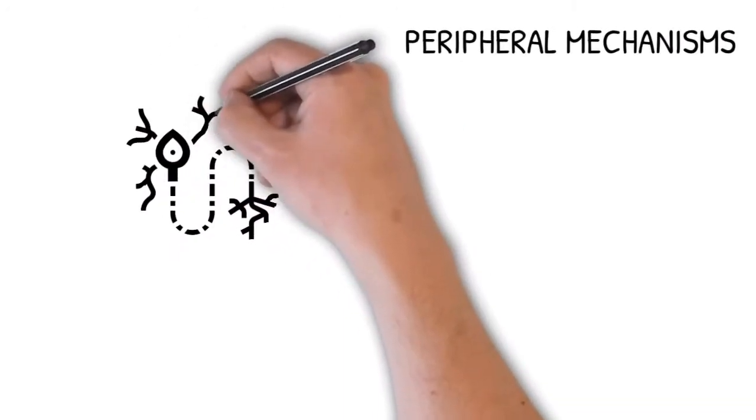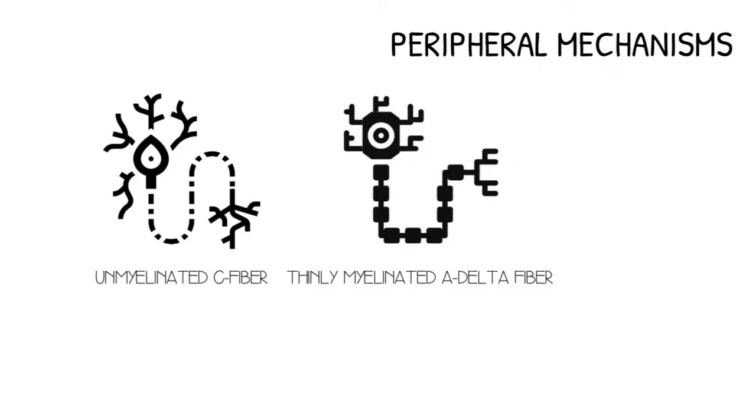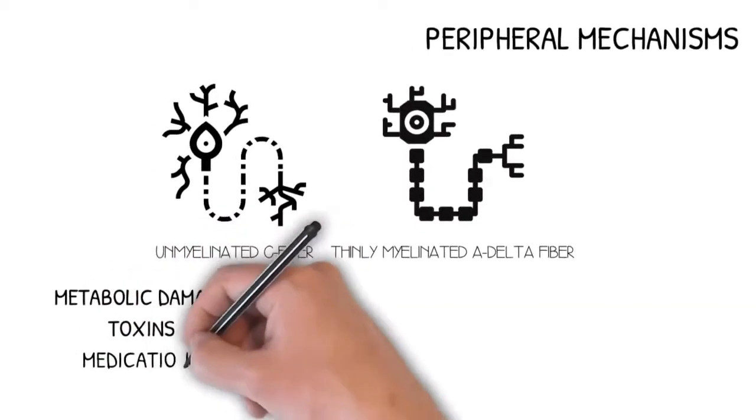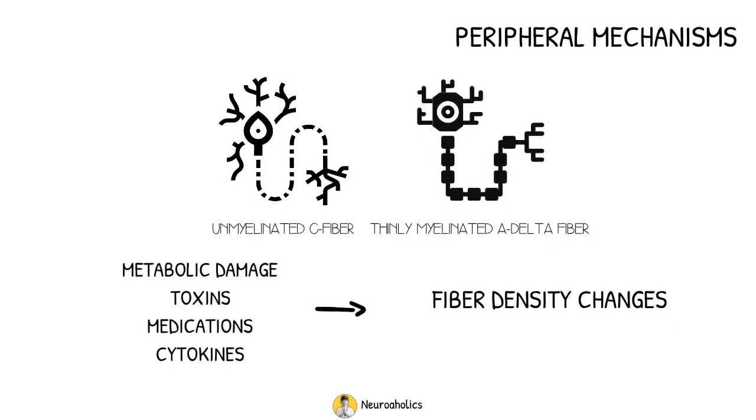Peripheral terminals of pain-processing unmyelinated C-fibers and thinly myelinated A-delta fibers can spur the development of neuropathic pain after being affected by metabolic damage, toxins, medications, cytokines, and other inflammatory mediators, resulting in fiber density changes and neuronal hyperexcitability.